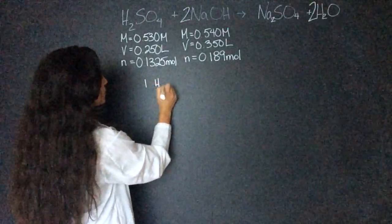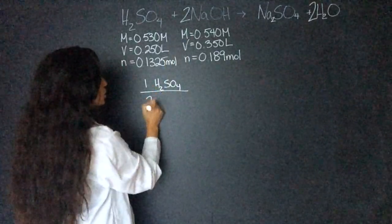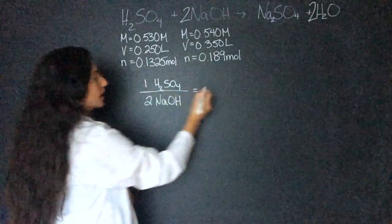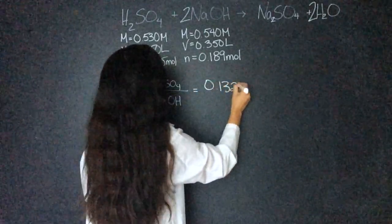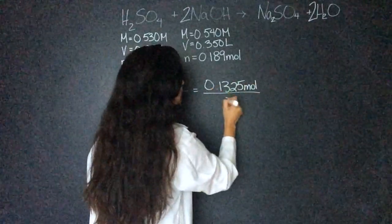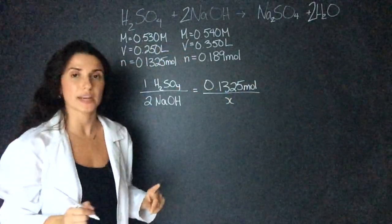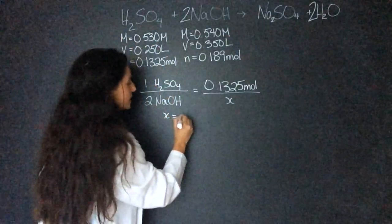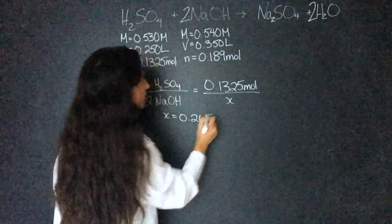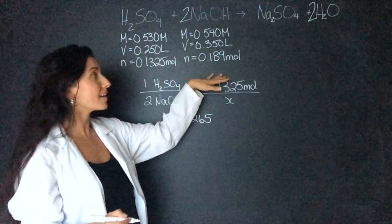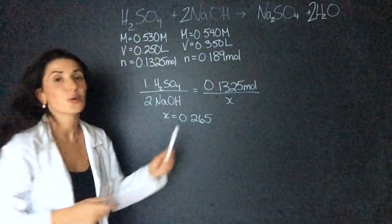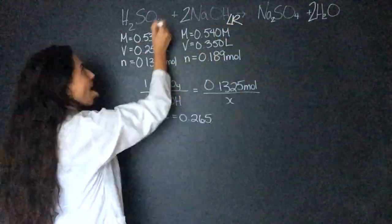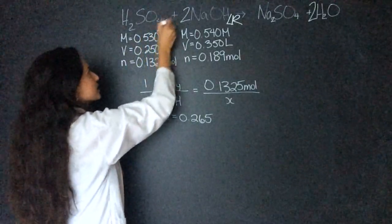So what I'll do is my first method for finding the limiting reagent where I compare the two reactants. So one mole of H2SO4 is equivalent to two moles of sodium hydroxide. I'll do 0.1325 mole over X and what I'm doing is I'm finding how much sodium hydroxide is needed to react with the full amount of sulfuric acid. I get X to be 0.265 which unfortunately is more than the NaOH that I have. So this tells me that sodium hydroxide is going to be my limiting reagent and H2SO4 sulfuric acid is going to be my excess.